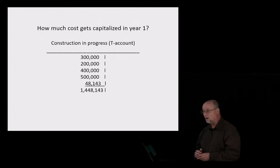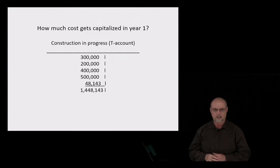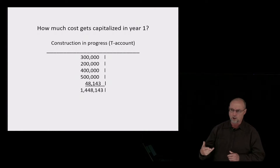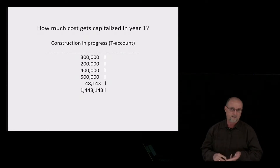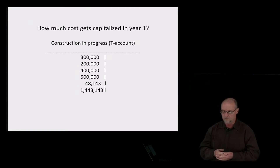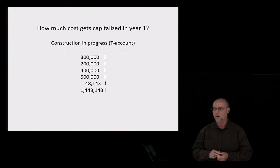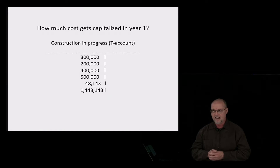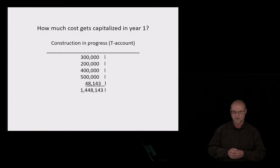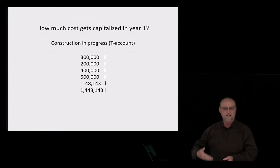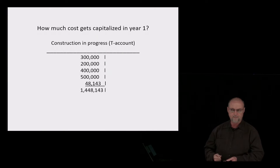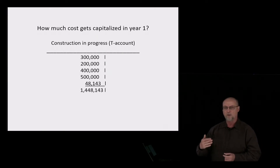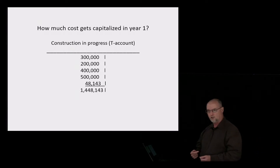At year end, on the balance sheet in the property, plant, and equipment section, we're going to have construction in progress — kind of like work in progress. We had those four expenditures of $300,000, $200,000, $400,000, and $500,000, plus the $48,143 of capitalized interest — that's the avoidable interest. At the end of the year, we have $1,448,143 of project cost on the balance sheet. But we're not done — we're still constructing this project, so we have to go through the next year to finish it.